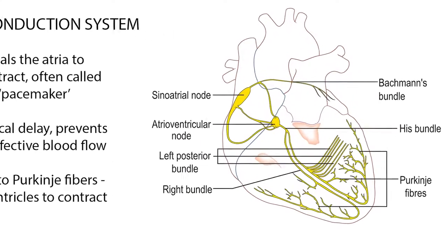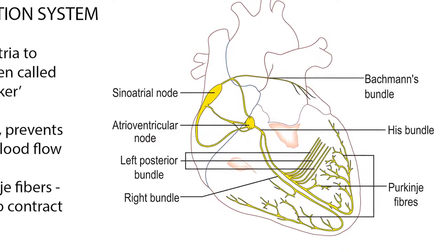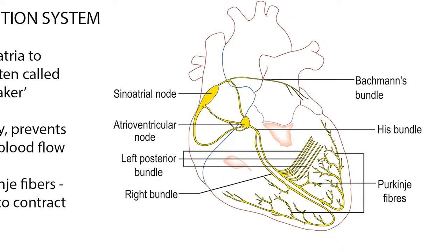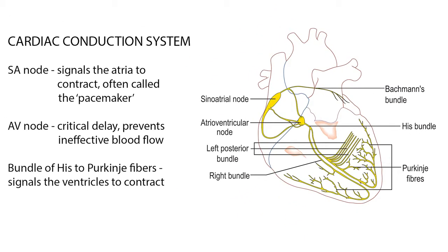The impulse then enters the bundle of His and is transmitted along the bundle branches. The bundle of His splits into two branches in the interventricular septum, which is just the division between the two ventricles. The left bundle branch activates the left ventricle and the right bundle branch activates the right ventricle. The right and left bundle branches taper out to form many Purkinje fibers, activating the ventricular walls almost simultaneously. The ventricular activation continues from the apex back toward the base of the heart to complete the process of ventricular contraction.